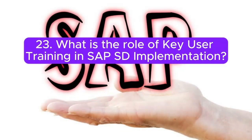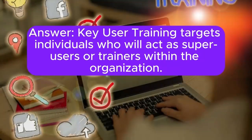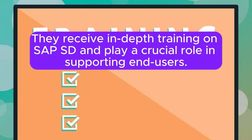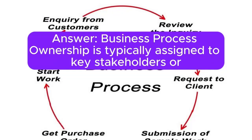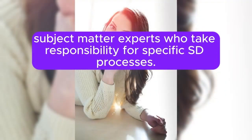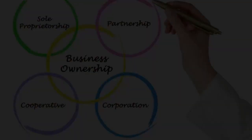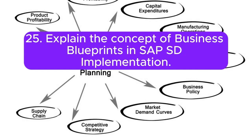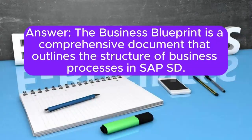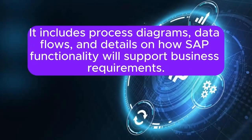Question 23: What is the role of key user training in SAP SD implementation? Answer: Key user training targets individuals who will act as super users or trainers within the organization. They receive in-depth training on SAP SD and play a crucial role in supporting end-users. Question 24: How is business process ownership established in SAP SD implementation? Answer: Business process ownership is typically assigned to key stakeholders or subject matter experts who take responsibility for specific SD processes. They contribute to decisions on process design and configuration. Question 25: Explain the concept of business blueprints in SAP SD implementation. Answer: The business blueprint is a comprehensive document that outlines the structure of business processes in SAP SD. It includes process diagrams, data flows, and details on how SAP functionality will support business requirements.